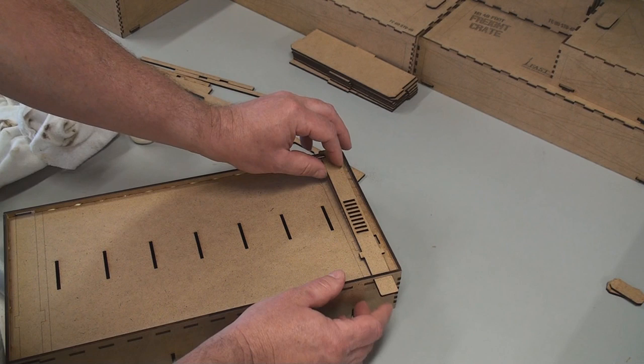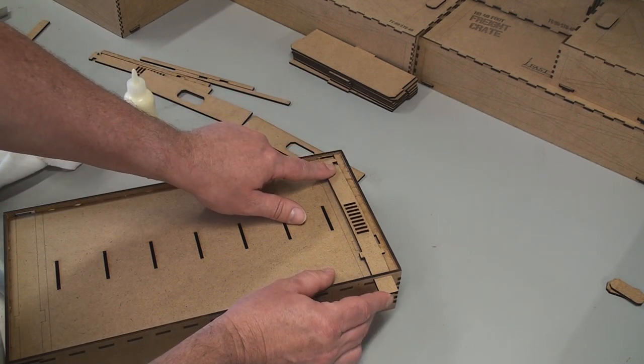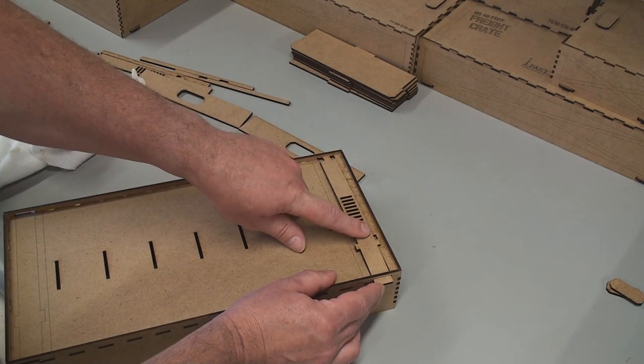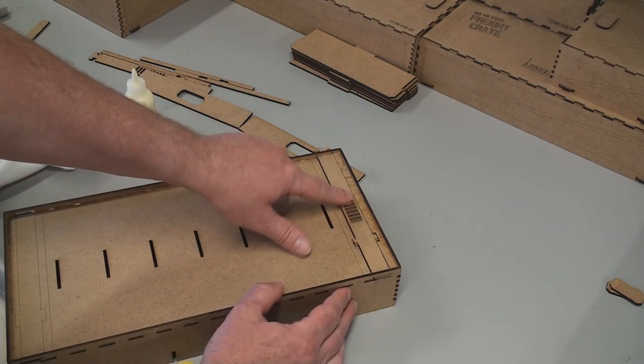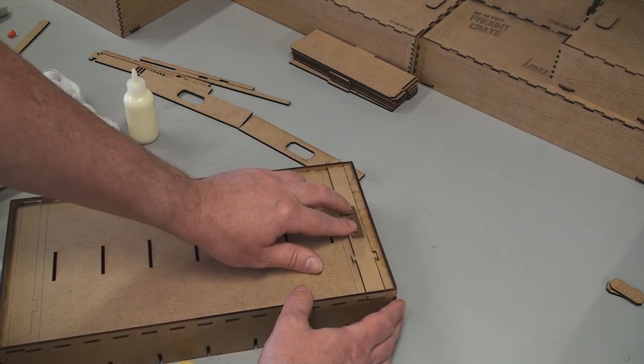It goes in the short end first, through there. And then you bend this down and push into the other end. This will just snap into place. There. Now we're good. So we've got the two parts in.